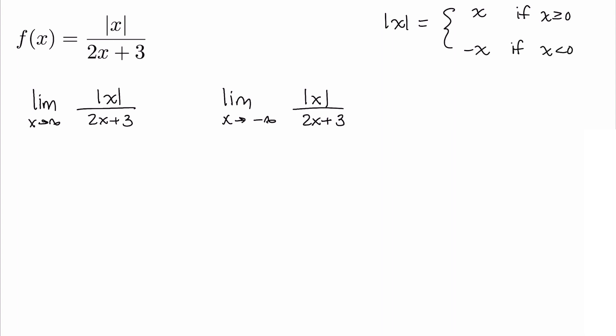This means the absolute value of x is the number underneath the bars if you have a non-negative number, and it's the opposite of the number underneath the bars if x is negative. Let's look at each of these limits separately.